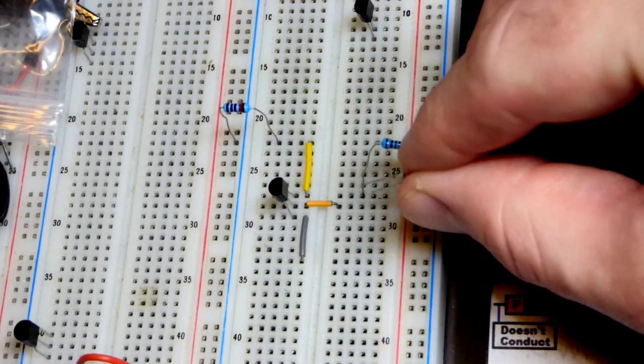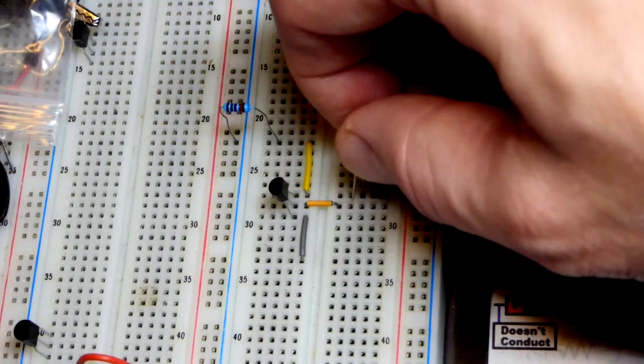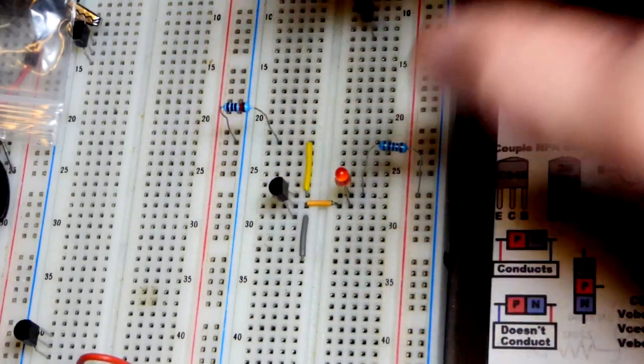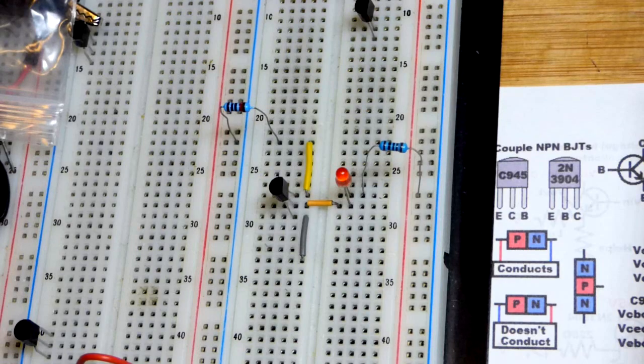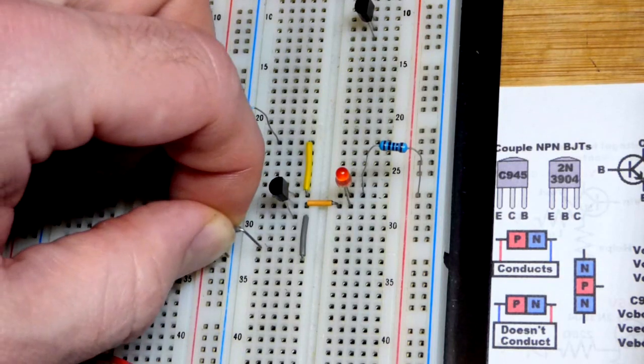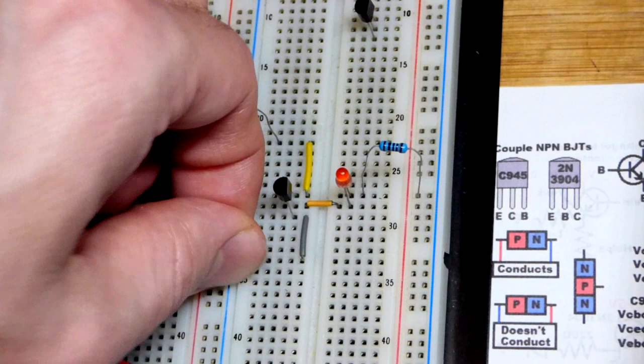So, we've got to remember to put the long lead, the anode, to the resistor, short lead the cathode down one spot. Pretty sure I got that there.